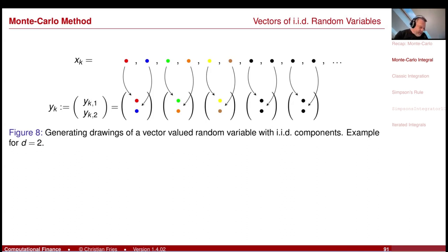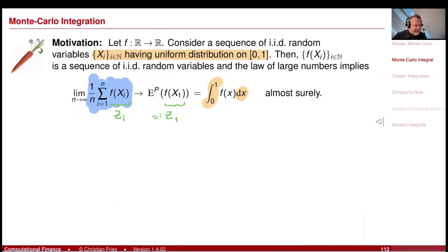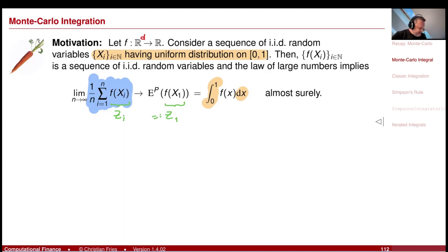But when you look back at our convergence result, I was considering a real-valued random variable — not even the case of higher dimensions. And here in the function, it's from ℝ to ℝ. The funny magic thing is that this also holds if you place ℝᵈ here — so if f is a function from ℝᵈ to ℝ, then this integral will be on the domain [0,1]ᵈ.